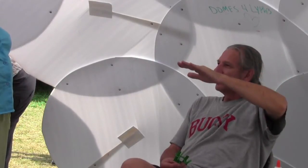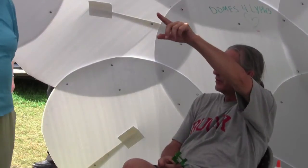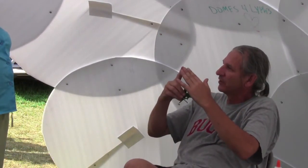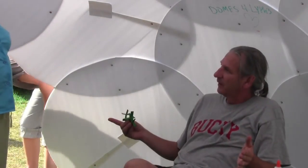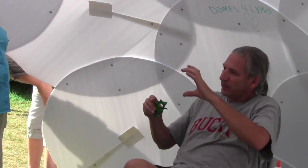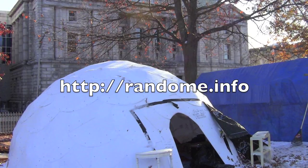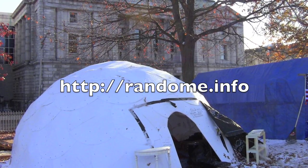You could put a pointy roof on it. You don't have to have a flat roof. Like the onion domes that you see on Greek Orthodox churches have a point on top so it would shed snow. You could do that. You could put a dome inside a dome with an air space in between and you can frame in the door easily, just like any structure.